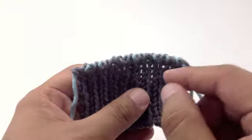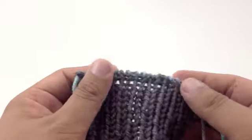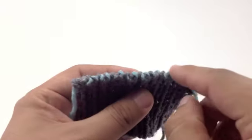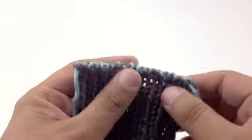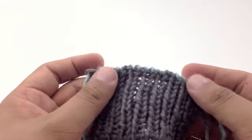The tubular bind off is an invisible bind off and it works seamlessly with 1x1 ribbing. It creates this really nice rolled edge which is great for finishing sweaters or socks.